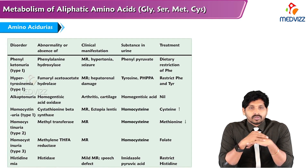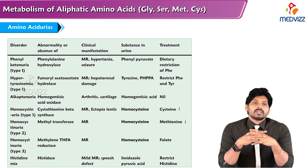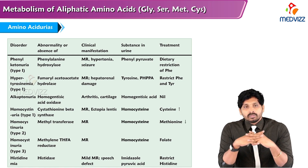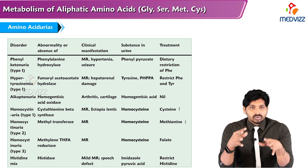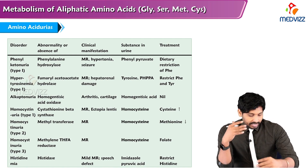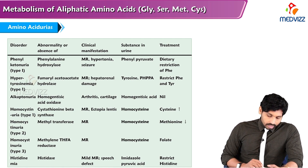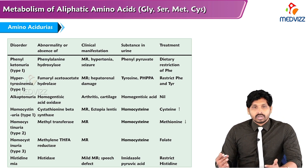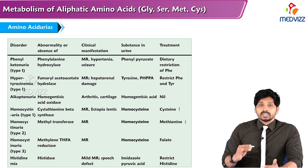Hello everyone, myself Dr. Suresh, professor of biochemistry. In this video we'll talk about different types of amino acidurias. We have previously discussed the metabolic part of amino acids and defective disorders related to them. In this table, I'll be explaining the type of amino aciduria, the disorder or absence of a particular enzyme, clinical manifestations, which form of the amino acid appears in the urine, and possible treatment.